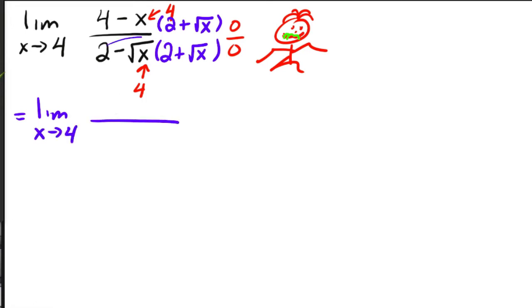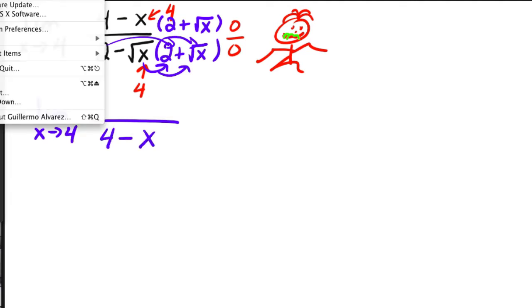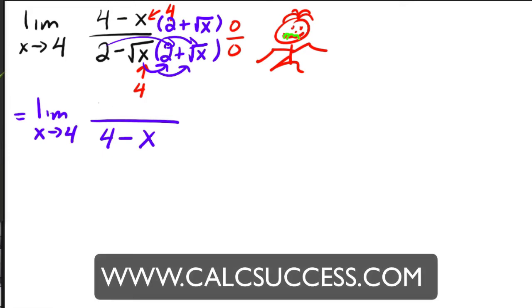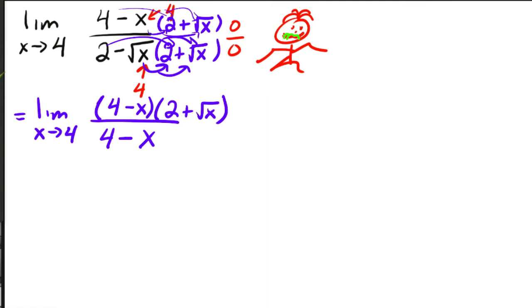Notice on the bottom, when you foil this all out, you would get, since this is a difference of squares, you would get four minus x. Now on top, notice that I'm not going to distribute that through because if you distribute it through, actually, you would make a bigger mess for yourself. But if you don't distribute it, notice that these guys right here are the same and just cancel.